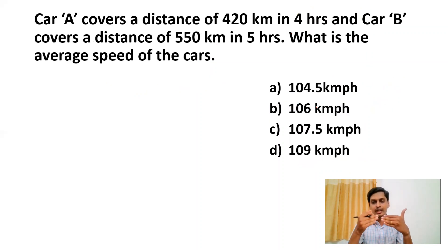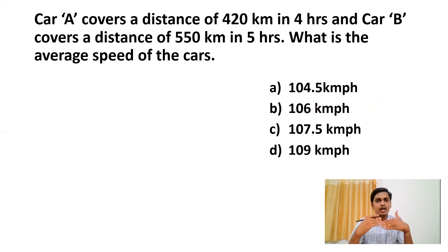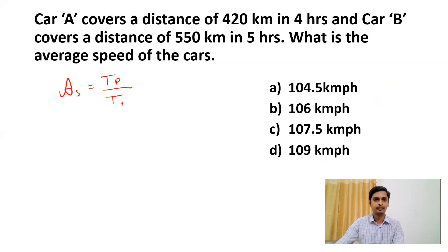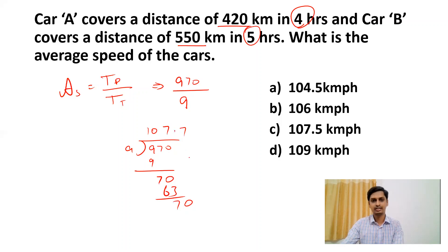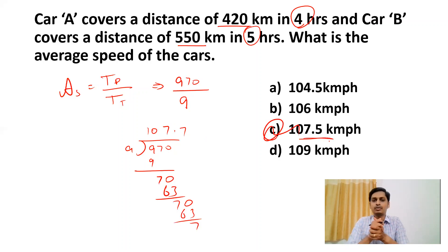Next question: Car A covers 420 km in 4 hours and car B covers 550 km in 5 hours. What is the average speed of the cars? Average speed = total distance / total time. Total distance = 420 + 550 = 970 km. Total time = 4 + 5 = 9 hours. So average speed = 970/9 ≈ 107.7, which is approximately 107.5 km per hour. Average speed formula is total distance divided by total time.